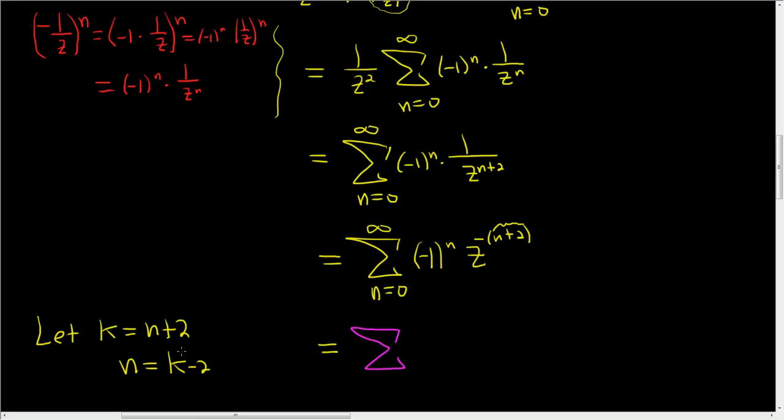Now when n is 0, k is 2. So we're starting at k equals 2, and we're going all the way to infinity, and we have negative 1 to the n, but n is k minus 2. So this is k minus 2, and then we have z to the negative, well, n plus 2, we said that was k. So negative k. And that is the final answer.